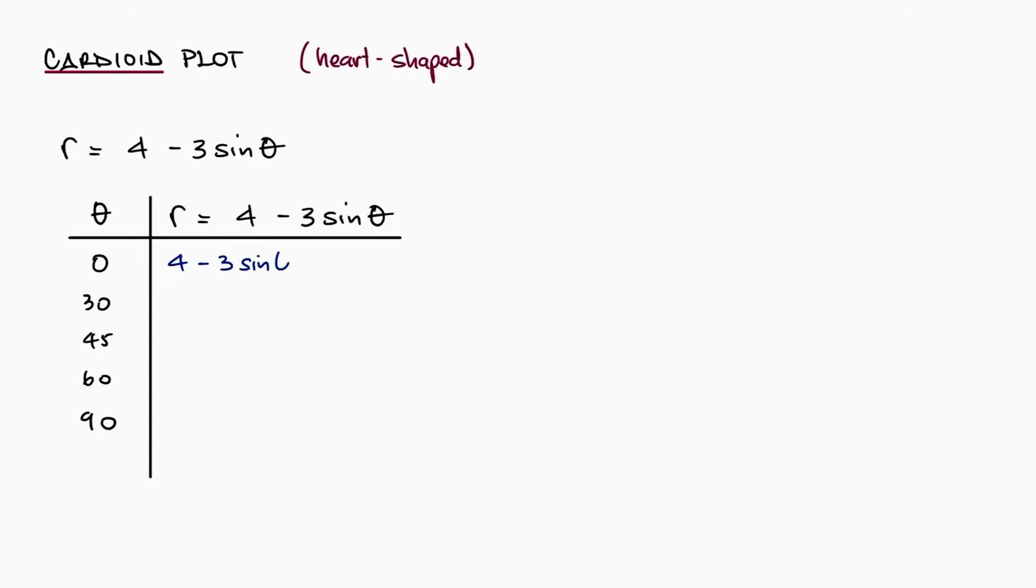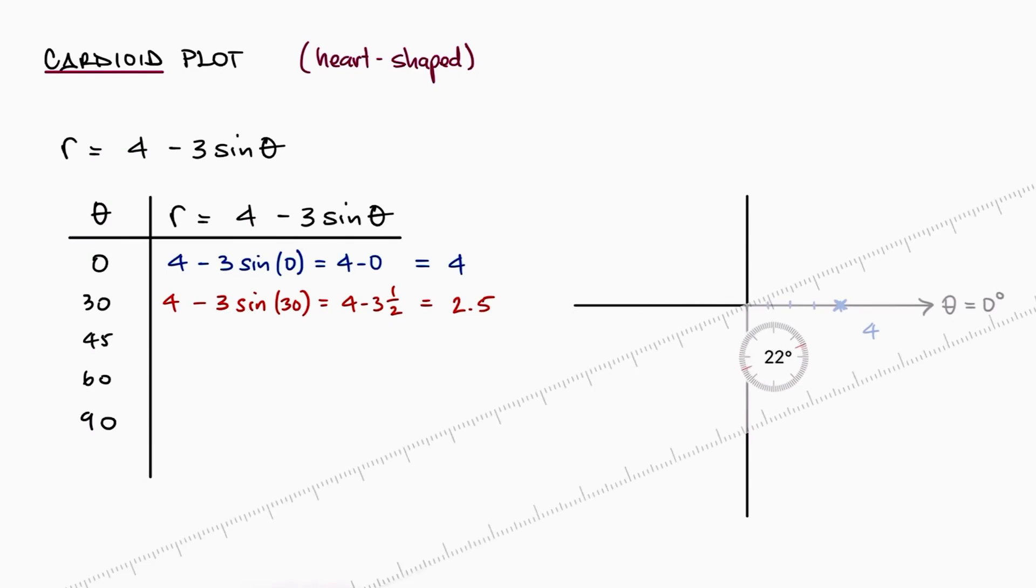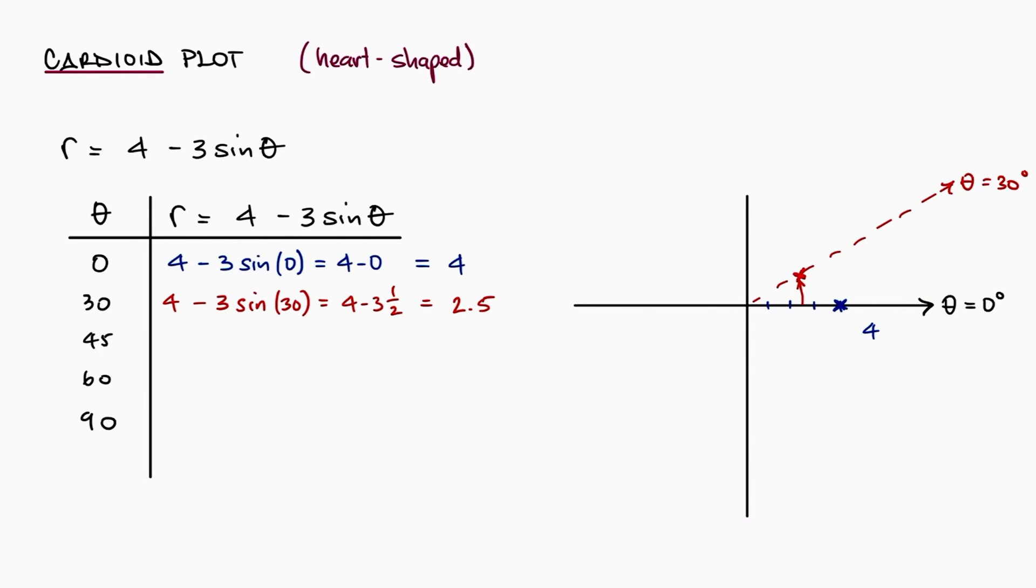For example, for theta equal to 0, r is equal to 4. Therefore, at a zero degree angle, the value of r is 4. For theta equal to 30, sine of 30 is 1/2, and therefore r is 2.5. So on the 30 degree line, r has a length of 2.5. For theta equal to 45, sine of 45 is √2/2, and therefore r is just below 2. This means that on the 45 degree angle line, r is 1.879. For theta equal to 60, r is 1.4. So at 60 degrees, the length goes down to 1.4. And finally, at theta equal to 90, r is 1.